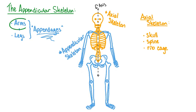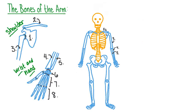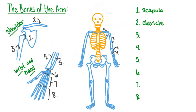Let's investigate the anatomy of the upper appendages, or arms. The human arm is specially adapted for throwing accuracy and for precise movement and manipulation. The upper arm is attached to the rib cage by two bones: the scapula and the clavicle. The scapula, sometimes called the shoulder blade, is a flat triangular bone found on the back of the upper torso. The clavicle, sometimes called the collar bone, is an S-shaped bone located near the base of the neck.